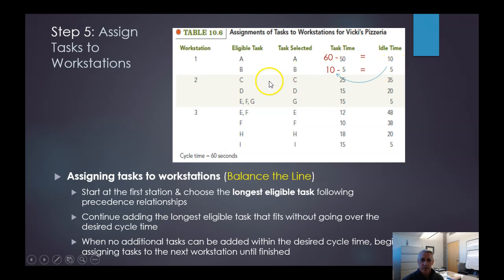Now, the way you kind of calculate this is 60 is what we want per station because to produce 60 pizzas an hour means we have 60 seconds for each station. So we have 60 minus 50 is equal to 10. So we get here, take the 10 minus the five, that gives us five of idle time. So that's how we define workstation one. Now, C takes more than five seconds, so we can't include C in there. So we start again.